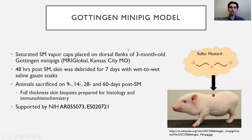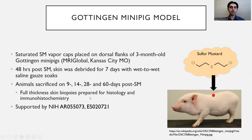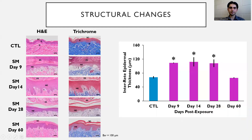We utilized a Göttingen mini pig model where we exposed sulfur mustard vapors to the backs of three-month-old Göttingen mini pigs. 48 hours after sulfur mustard exposure, skin was debrided for seven days with wet-to-wet saline gauze soaks. The animals were then sacrificed at 9, 14, 20, and 60 days post-SM, and full thickness skin biopsies were prepared for histology and immunohistochemistry.